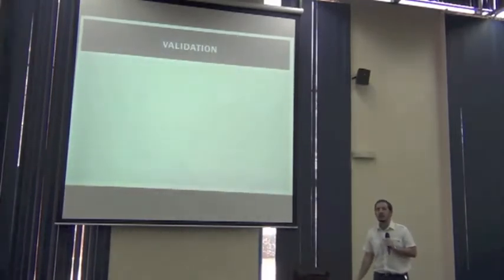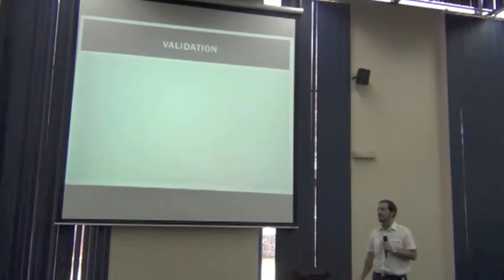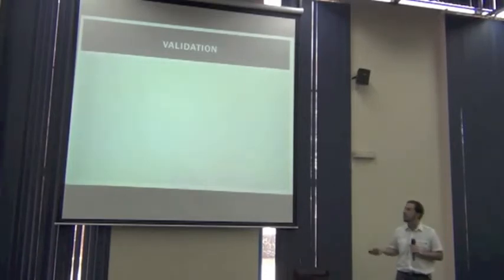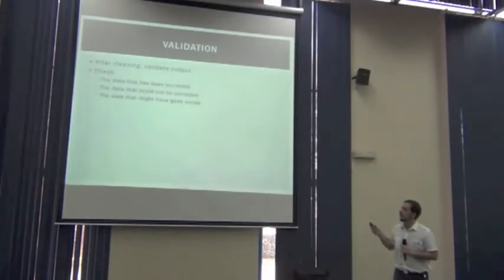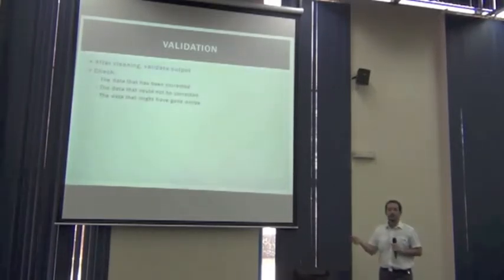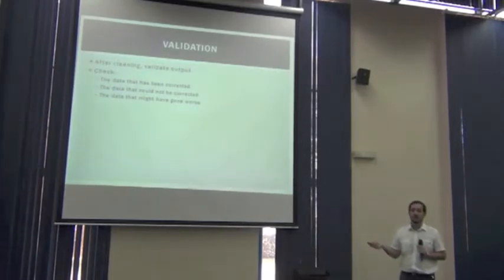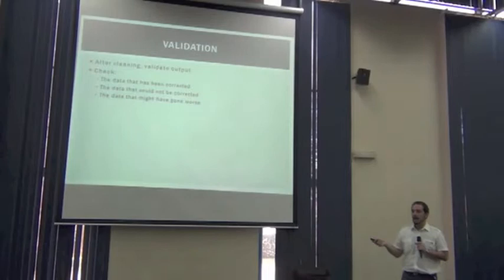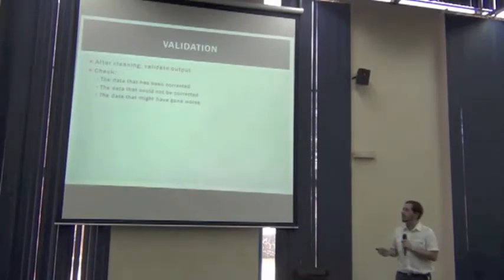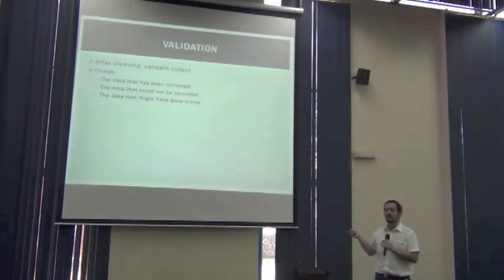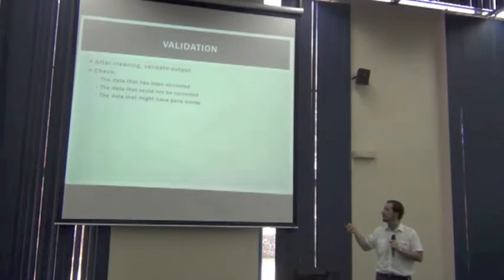And what happens after the taxonomic assessment and, in fact, any assessment? We have to validate it. We have to validate what we have done because we want to know how much data has been corrected, how much data could not be corrected, and how much data, if any, has gone worse. We might have introduced some inaccuracies when processing the data. So we have to check if something like this happened.